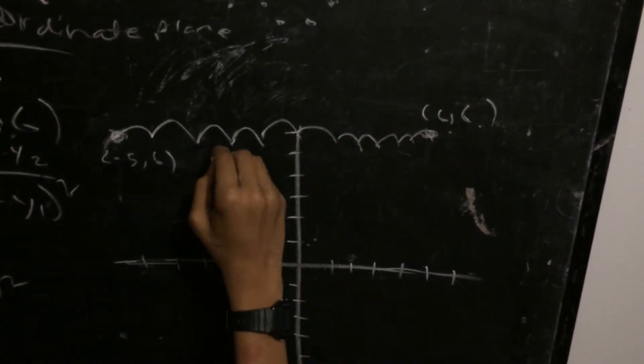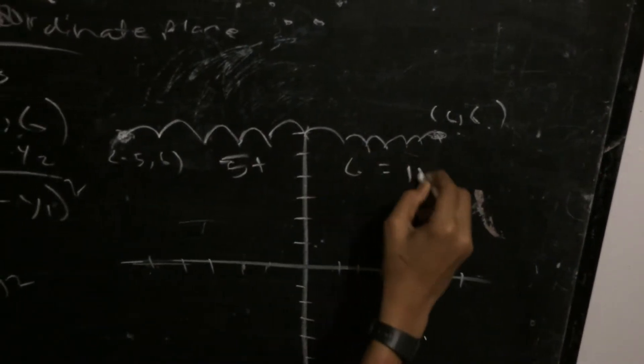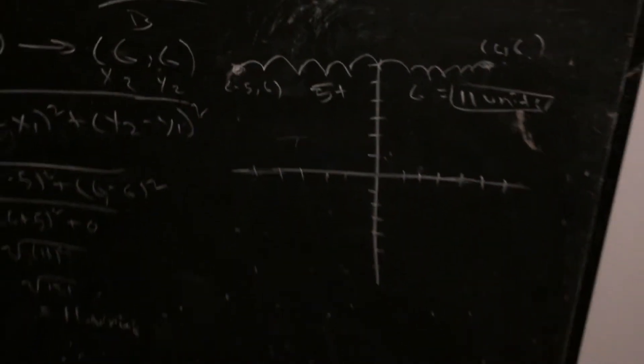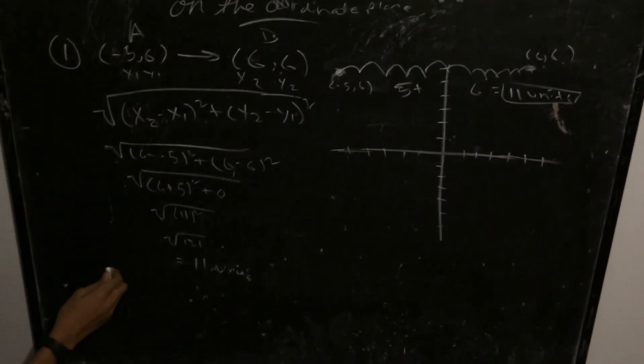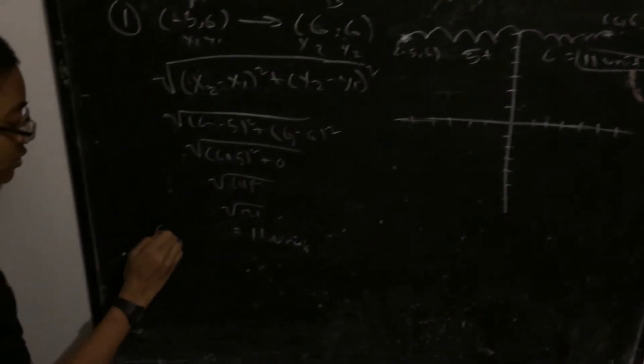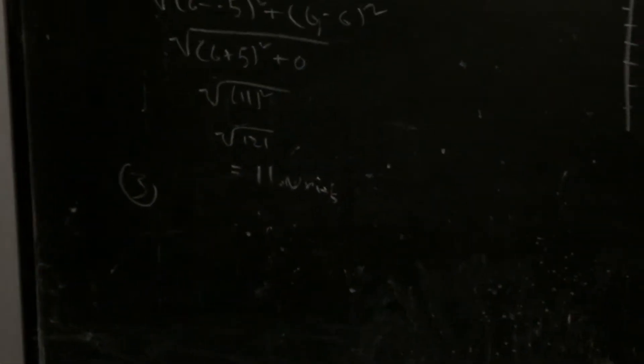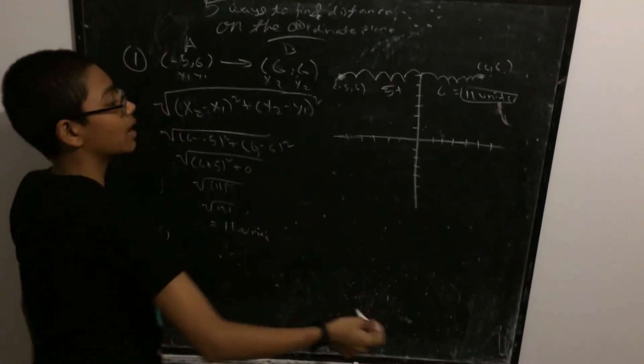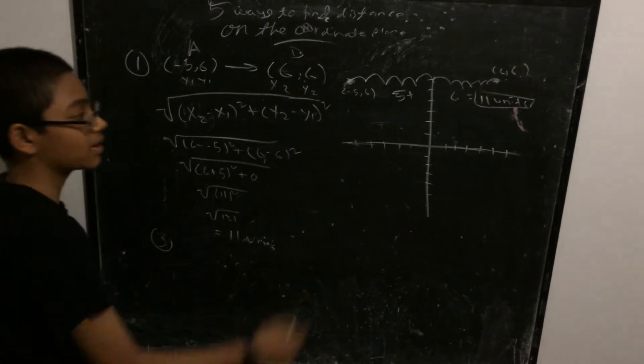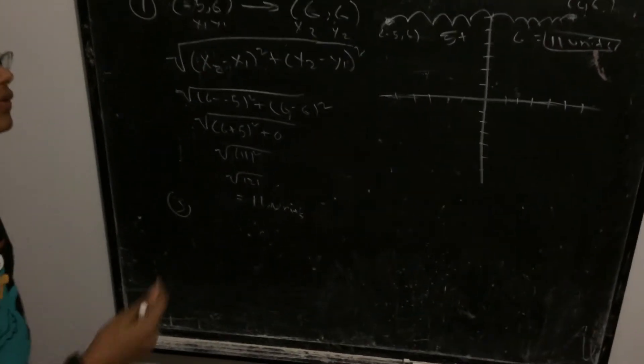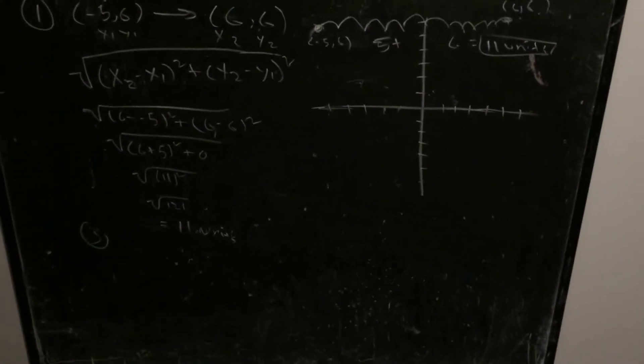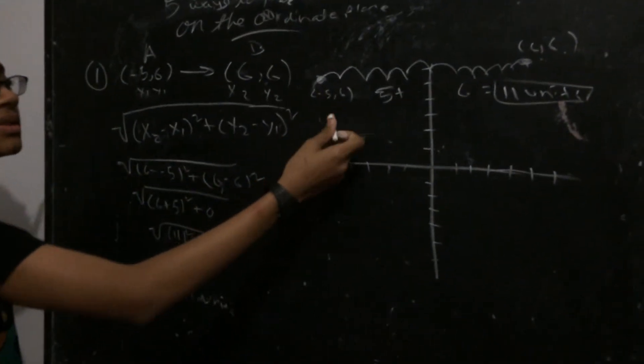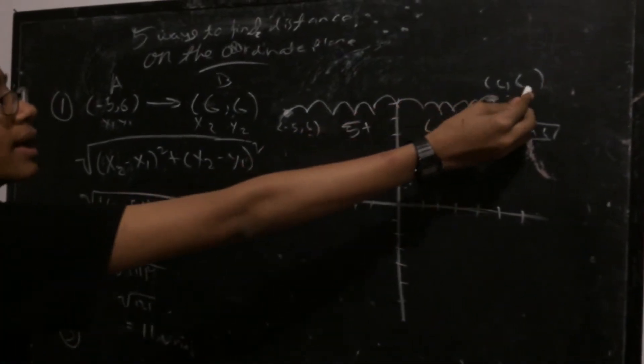You could also use absolute value to find the distance. So if the two points are on separate quadrants instead of being on the same quadrant, then you have to add the two absolute values. This only works if you have the same y coordinate or the same x coordinate.